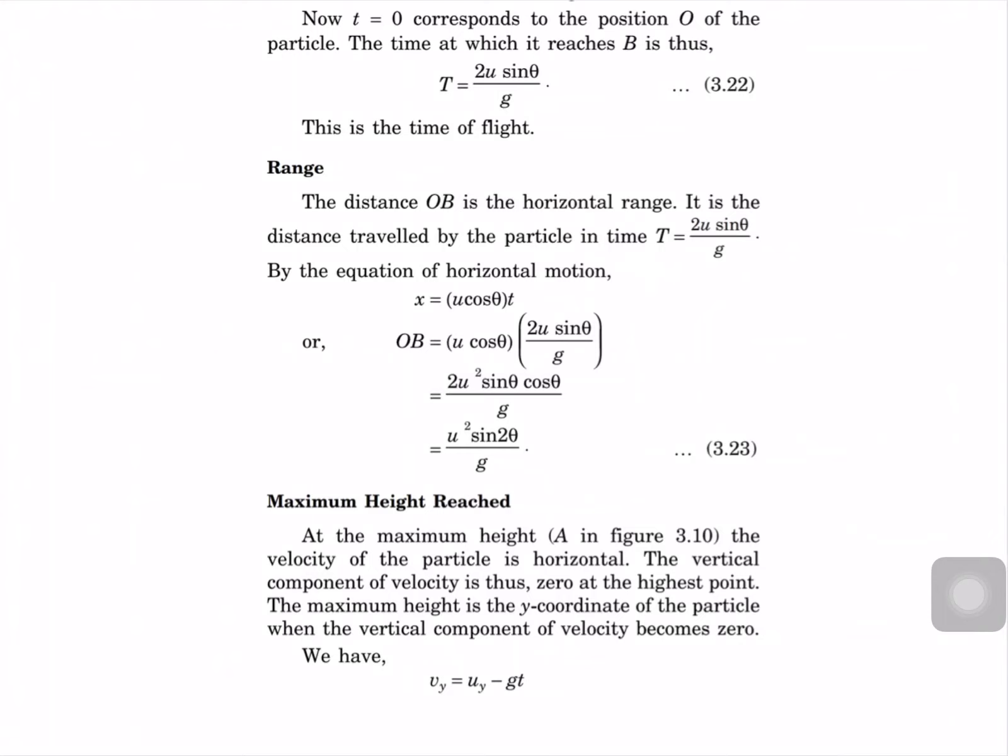Next, the range — horizontal distance OB — is the horizontal distance traveled by the particle in time T. So x equal to U cos theta times T, meaning OB equal to U cos theta times 2U sin theta by g, giving 2U² sin theta cos theta by g. Since 2 sin theta cos theta equals sin 2 theta, the range R equal to U² sin 2 theta by g.